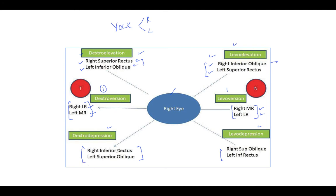Remember, in yoke muscles one muscle from the right side and one from the left side are always involved. Exam questions may ask which muscle is involved in dextro version, ask you to mark the correct pair of yoke muscles, or ask what the yoke muscle of the right medial rectus is — the answer would be the left lateral rectus.